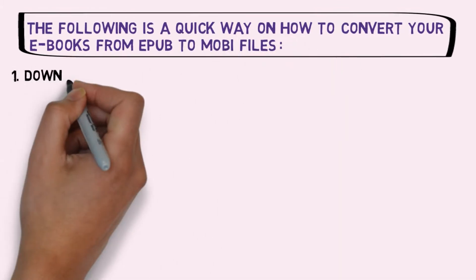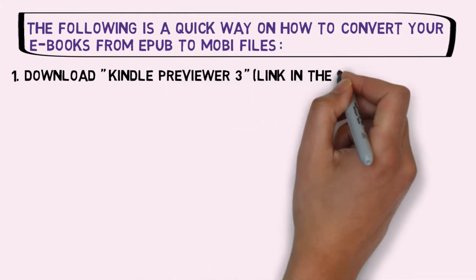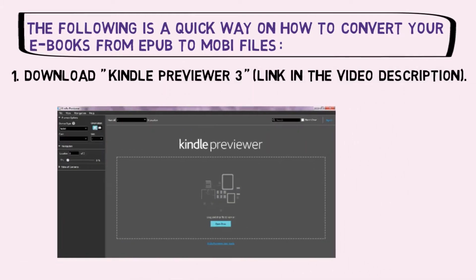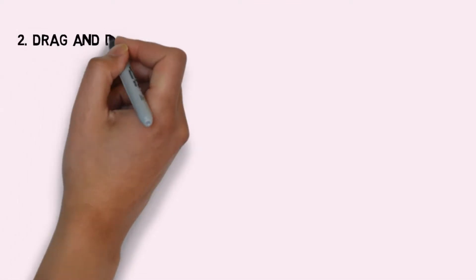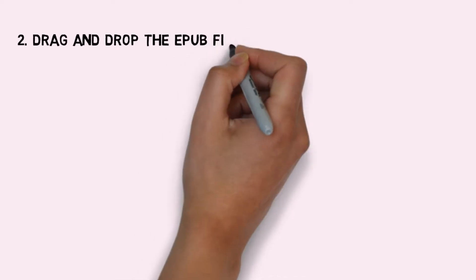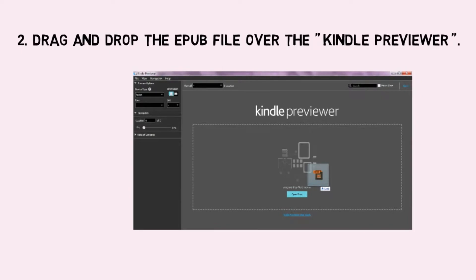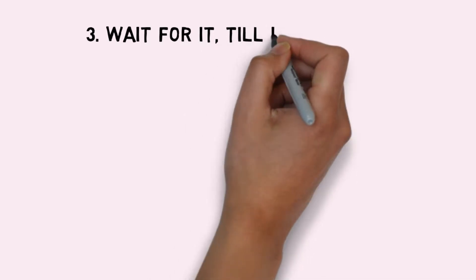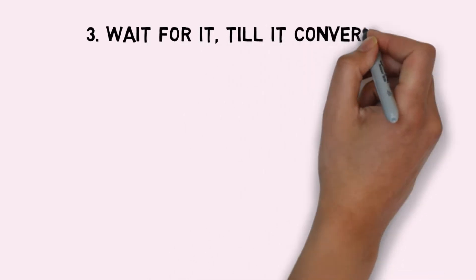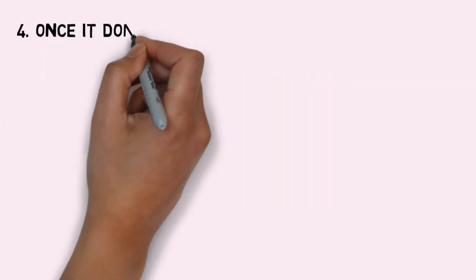1. Download Kindle Previewer 3, link in the video description. 2. Drag and drop the EPUB file over the Kindle Previewer. 3. Wait for it till it converts.